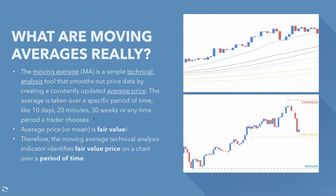Traders tend to put moving averages on all manner of timeframes, and I'm going to tell you why that doesn't make sense. The most powerful moving average periods — when I say powerful I mean the ones that make the most sense — moving average indicators identify fair value on a price chart. Who wants to buy in an expensive area? No one.